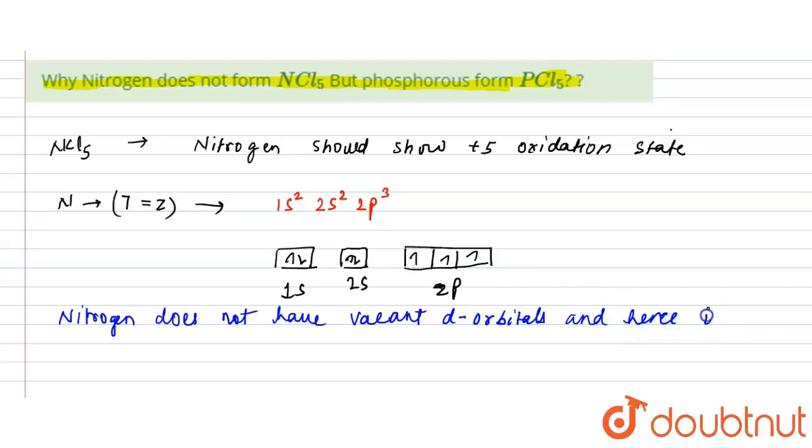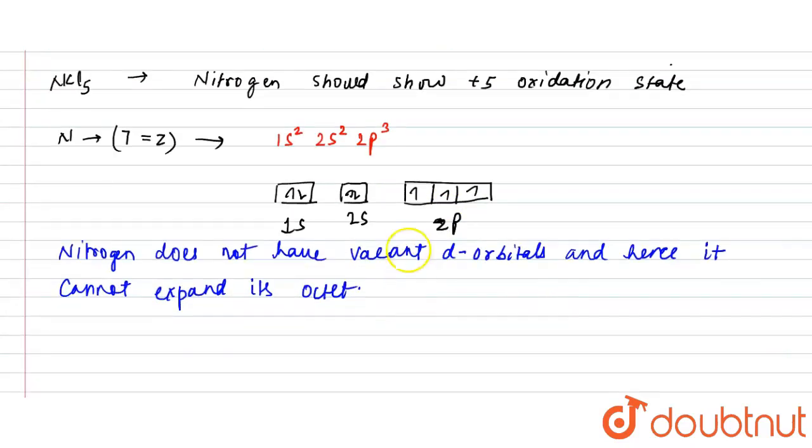Hence it cannot expand its octet. It can show +3 oxidation state, so NCl₃ will be possible, but it cannot expand its octet to form NCl₅.